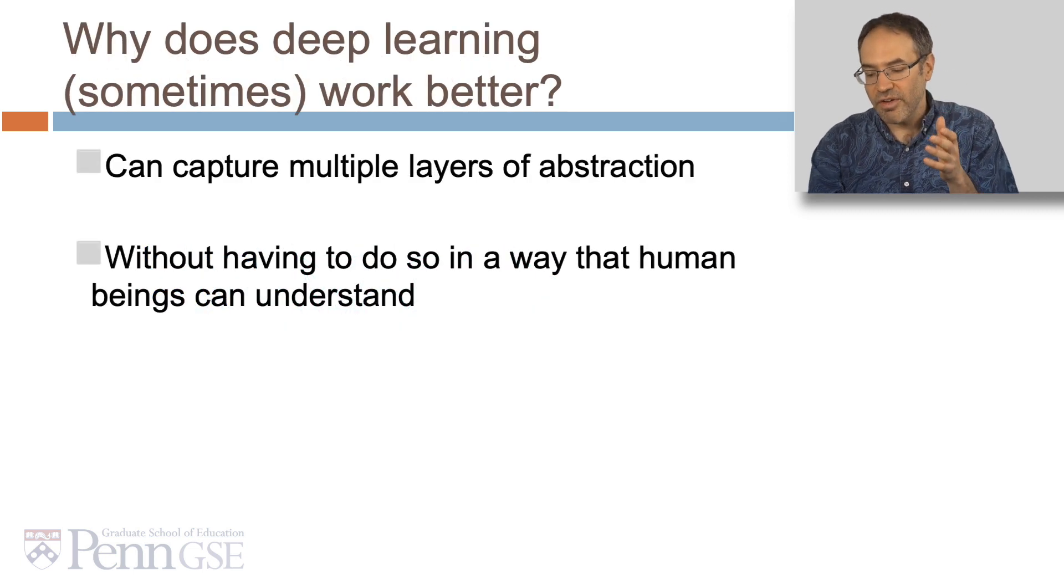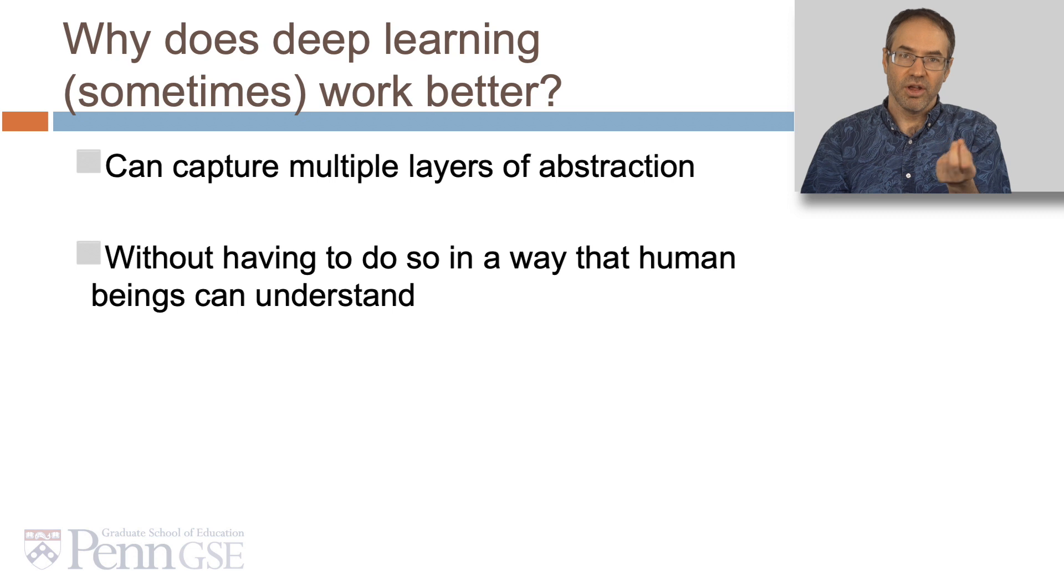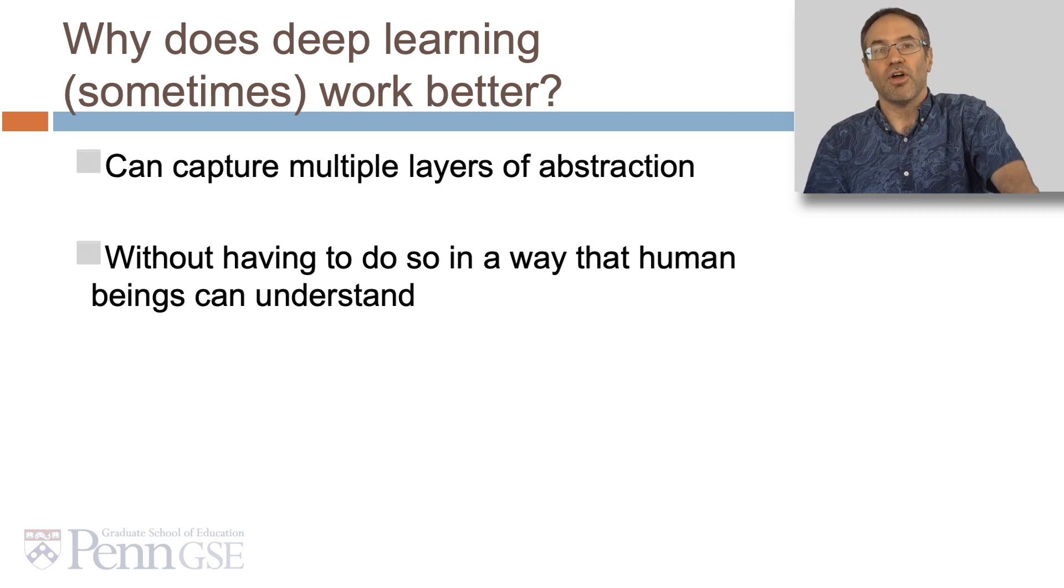Only the data scientist knows how many hidden layers are in the middle. We call this idea of having multiple layers deep learning. Sometimes it works really great. The reason why it's thought to work so well is because it can capture multiple layers of abstraction without having to do so in a way that human beings can understand.